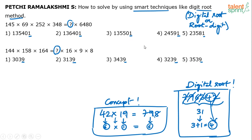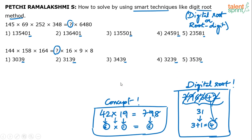Maybe you can do approximation, but even that may not be very useful because the options are very close: 1,35,401 and 1,35,501 differ by just 100 over 1,35,000. Similarly in question 2, the options differ by about 100 each — 30,39 and 31,39 and 32,39 and 34,39. So when the options are spaced very closely, going for approximation is not a great idea. Unit digit method cannot be applied, approximation method cannot be applied — either do the complete calculation or go for digital root.